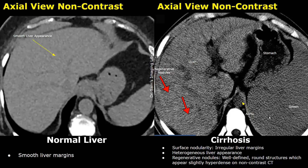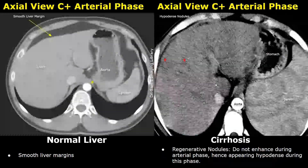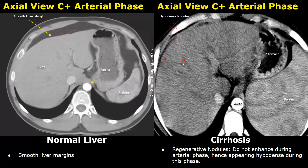This hypodense area is the portal vein. This part of the liver is the caudate lobe — in cirrhosis, the caudate lobe can increase in size. During the arterial phase, the regenerative nodules do not enhance; hence they appear darker or hypodense. You can see hypodense round nodules within the liver appearing darker than the surrounding liver tissue.